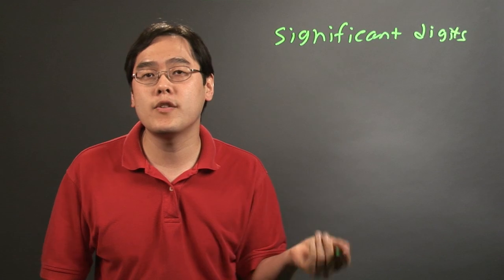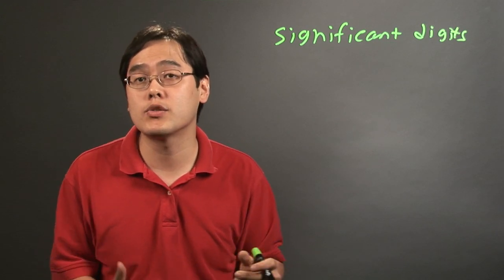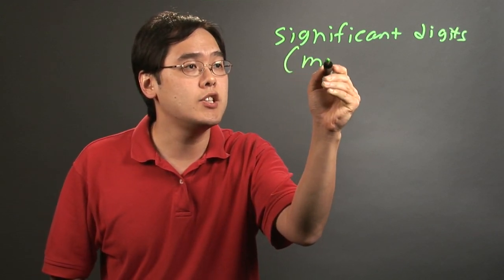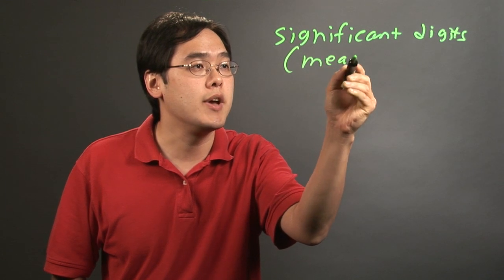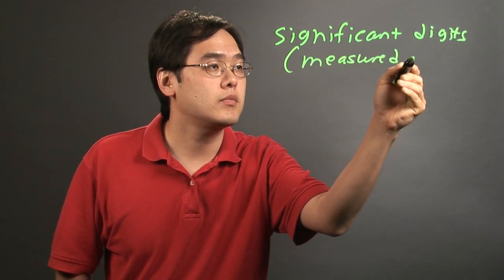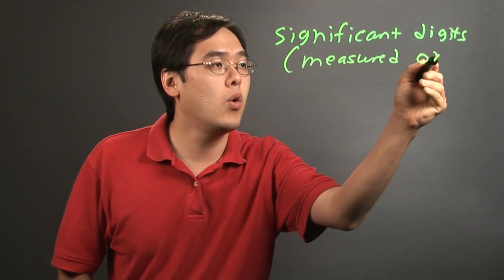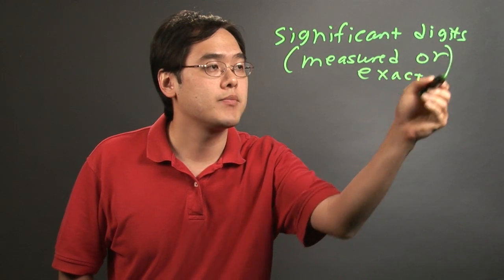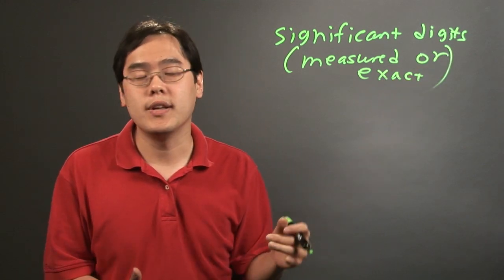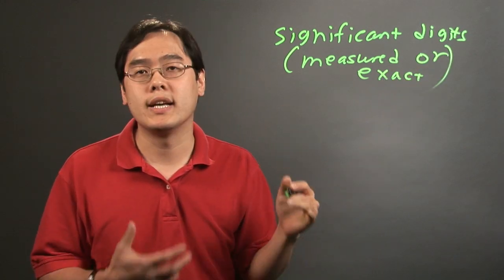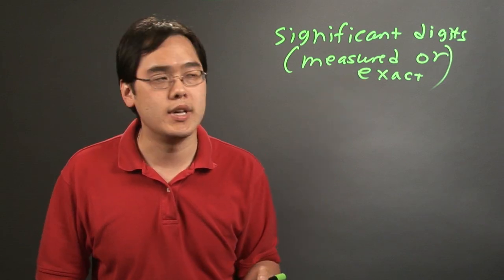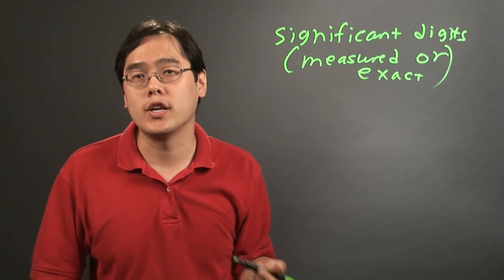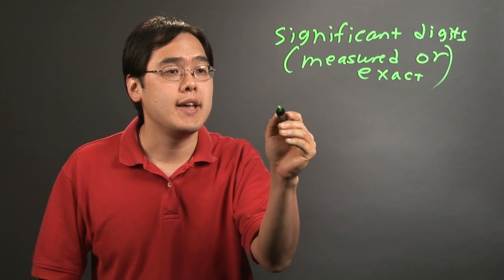This is going to vary from study to study and is actually used a lot in science. Significant digits can be either measured or exact. By now you'll have already gone over exactly what the difference between the two is. So significant digits is going to be an important criteria for rounding.